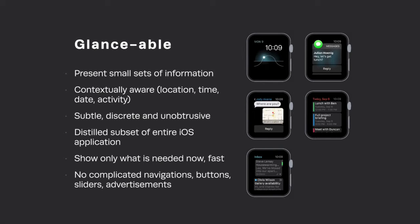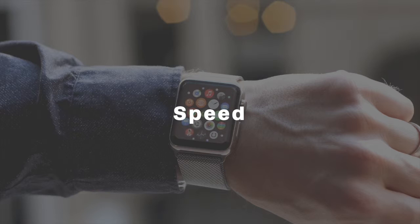In order for us to build apps that are actually effective, we have to be presenting as little information as possible, and the information we do present needs to be contextual — it needs to use things like location, time, date, and health to tailor exactly what we show to that user at that time and place. We need to create interactions that are really subtle and discreet. We have to distill the essence of our iOS app into a really tiny but still useful and relevant package.